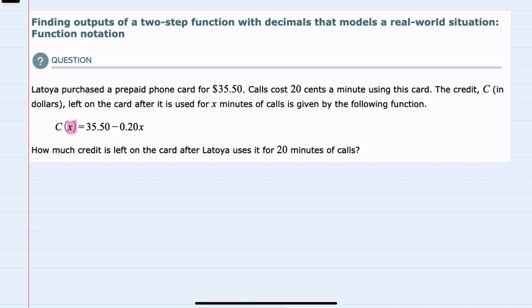minus $0.20 for each minute. So $0.20 times X. And since we have this function provided to us,